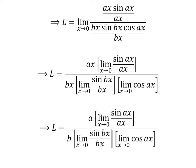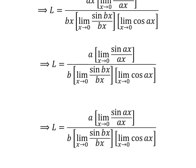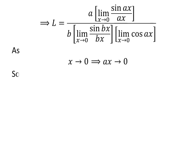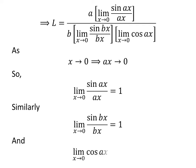Here, I have cancelled out the common factor x in the numerator and the denominator. As x approaches 0, a times x approaches 0. This implies the limit of sine of a times x upon a times x as x approaches 0 is equal to 1. Similarly, the limit of sine of b times x upon b times x as x approaches 0 is equal to 1, and the limit of cosine of a times x as x approaches 0 is equal to 1.